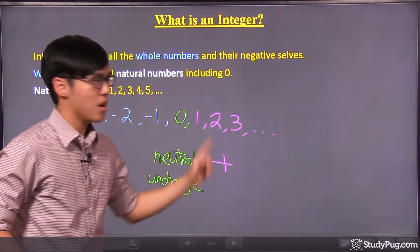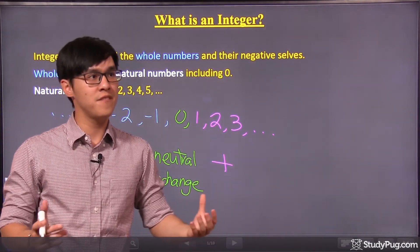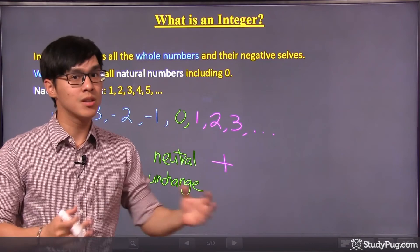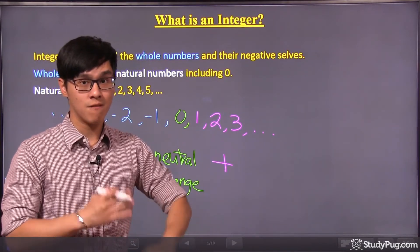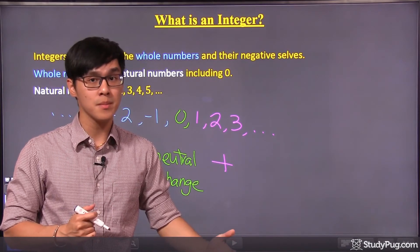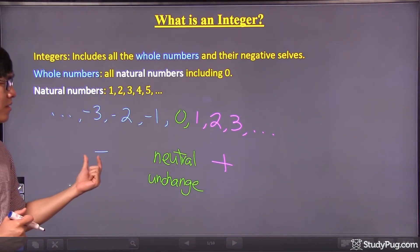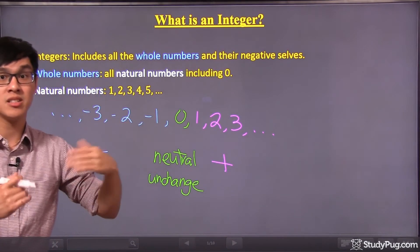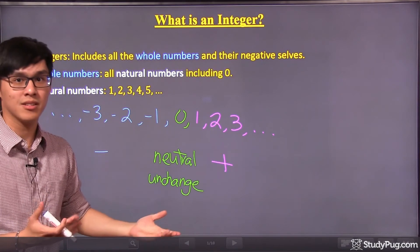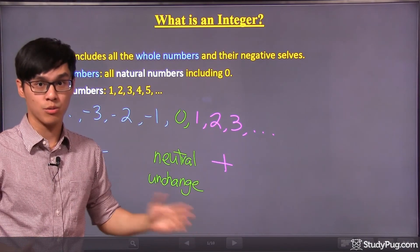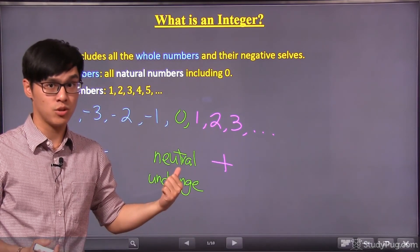So what is positive? Well, you can think of it this way. If you earn something, you gain something, that will be a positive number. And conversely, if you lose something, that will be a negative. So this is how you can distinguish between positives and negatives. And as for zero, it's clearly unchanged or neutral. Nothing is being changed, that's when you use zero.